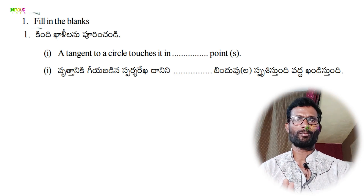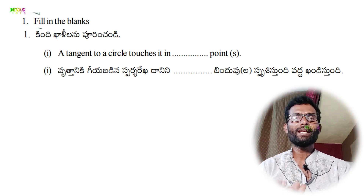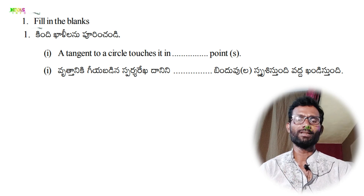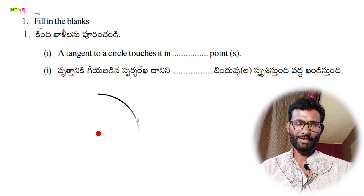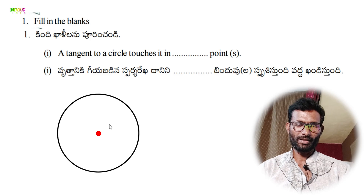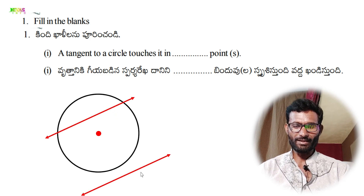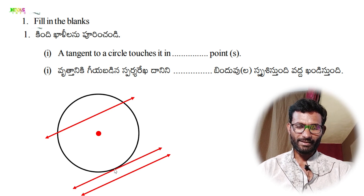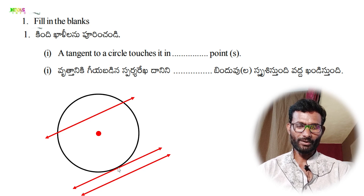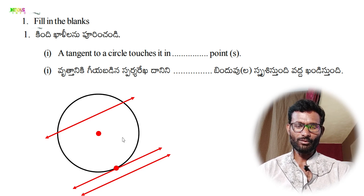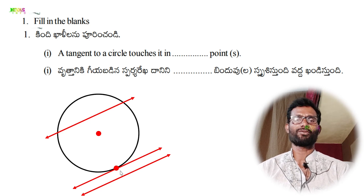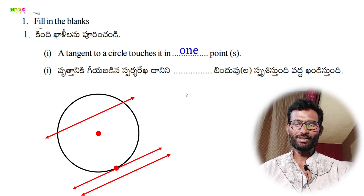If we draw a tangent to a circle, the tangent touches the circle at one point. So the answer is 1.